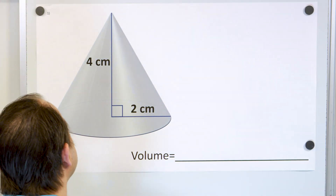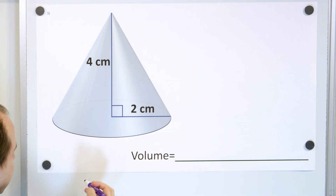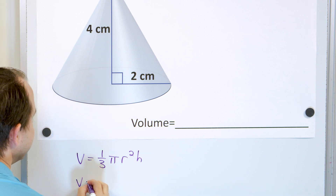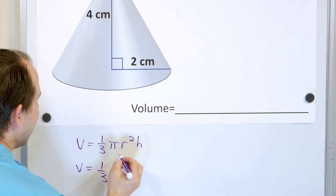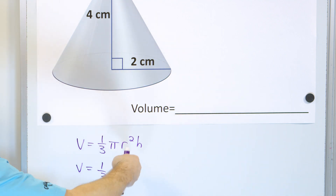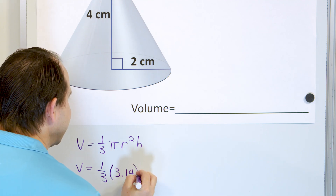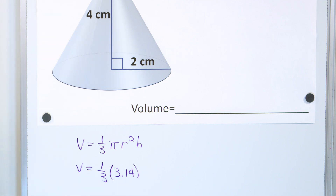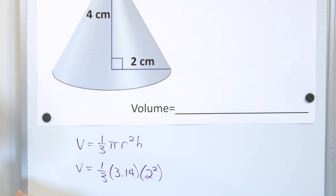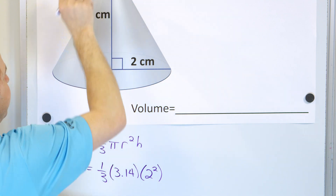So let's go ahead and apply what we've learned. We have a cone and we want to find its volume. The volume is one-third times pi times r squared times h. We fill in the blanks: one-third multiplied by pi, which we'll approximate as 3.14, times the radius squared — the radius is 2, so we have 2 squared — and then the height, which is measured from the base at a 90-degree angle straight up to the tip, is 4 centimeters.